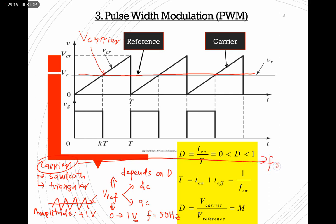For the carrier signal, the frequency depends on what we call the switching frequency, which is normally a high frequency. For DC to DC converters, you can select any frequency range, but it must be larger than 20 kHz and can go up to 1 or 2 MHz. Why it must be greater than 20 kHz will be explained in the design consideration section.